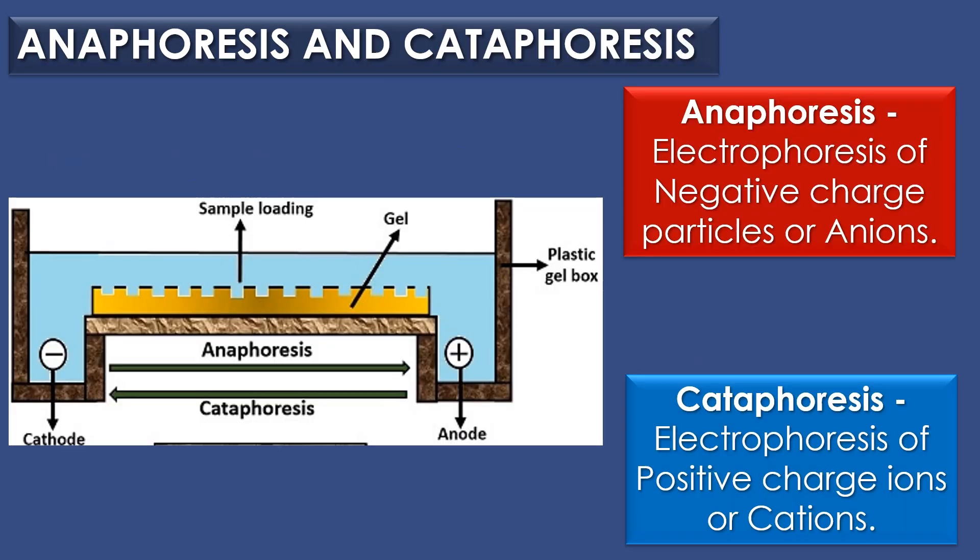Anaphoresis and cataphoresis: anaphoresis is the electrophoresis of negatively charged particles or anions, whereas cataphoresis is electrophoresis of positively charged ions or cations.